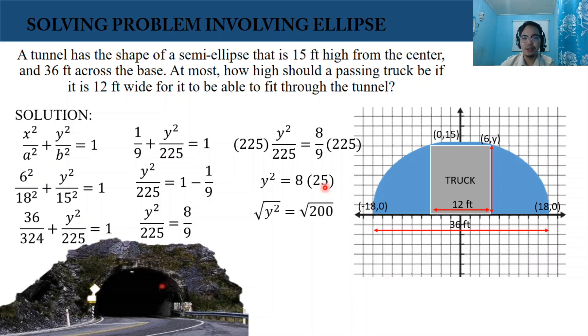Then find the value of y. y equals square root of 200, and that is 10 square root of 2. And approximately, that is 14.14 feet.